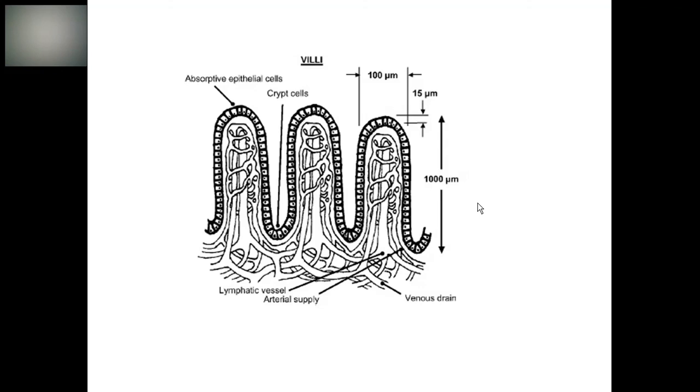Villi are finger-like projections which play a fascinating role in absorption. The villi is composed of a layer of epithelial cells of a thickness of around 15 microns. These epithelial cells play a role in the absorption of food materials and drug absorption. The villi is 1000 micrometers in length and 100 in thickness.